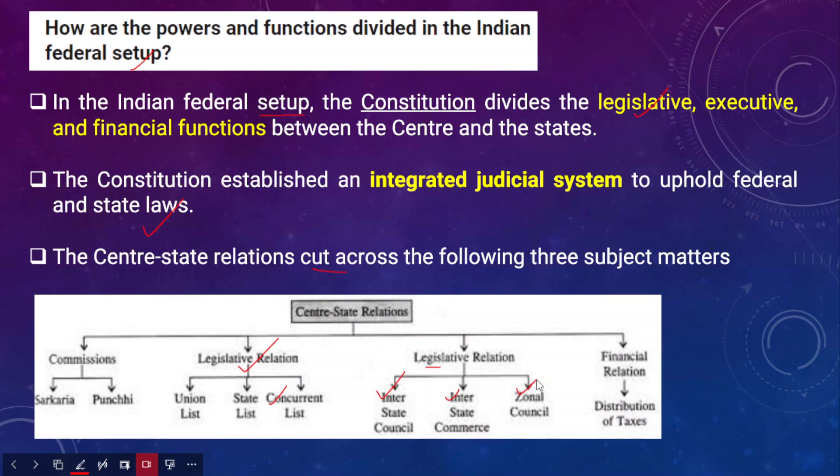It is important to understand that the Interstate Council is a constitutional body, whereas the journal council is not a constitutional body. When we talk about financial relations, it specifically deals with the distribution of taxes between the center and state governments. We have the Finance Commission, which is provided for by the Indian Constitution. Every five years, the president appoints a Finance Commission, which is tasked with the devolution and distribution of taxes between the center and the states.